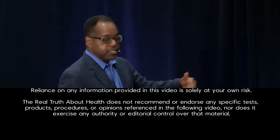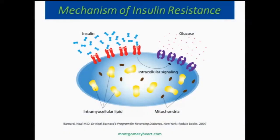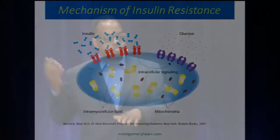But over time, as more insulin receptor defectiveness occurs, the pancreas starts to wear out and is not able to compensate. At that point in time, the blood sugar starts to go up, and you start to get diabetes. But for years, you can have insulin resistance.